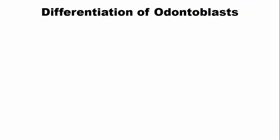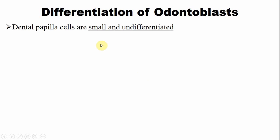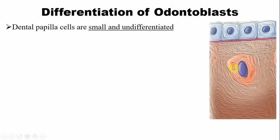The dental papilla cells are very small and undifferentiated cells. This is the inner enamel epithelium, there is a basement membrane, and there is a cell-free space with no cells. Below that there are numerous dental papilla cells — very small and undifferentiated.